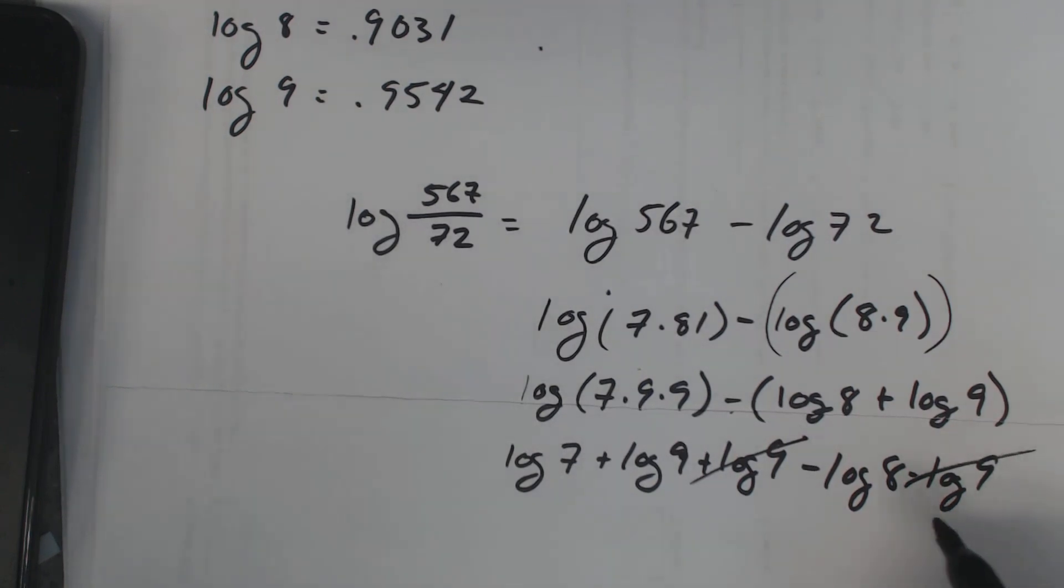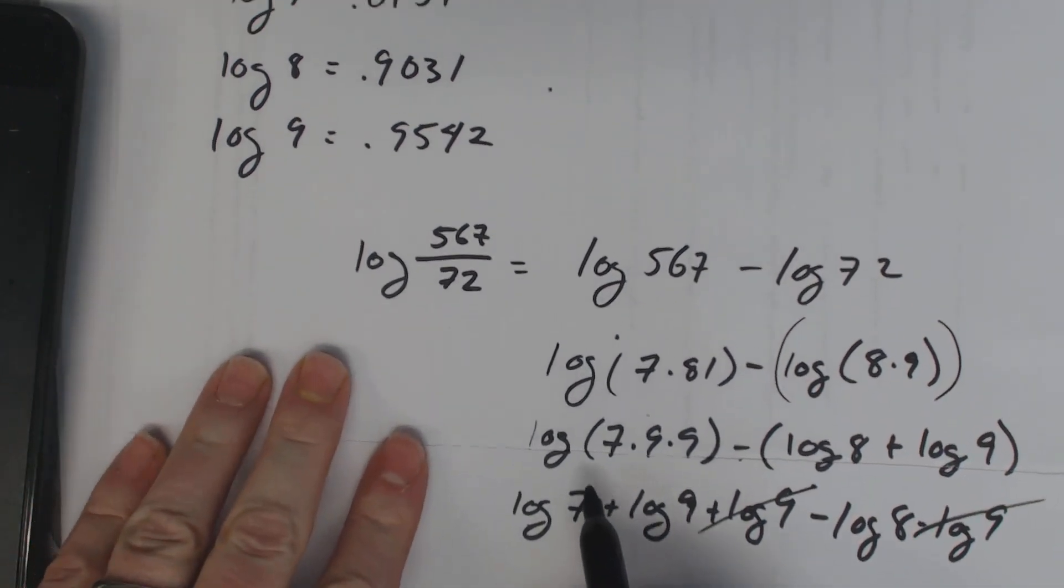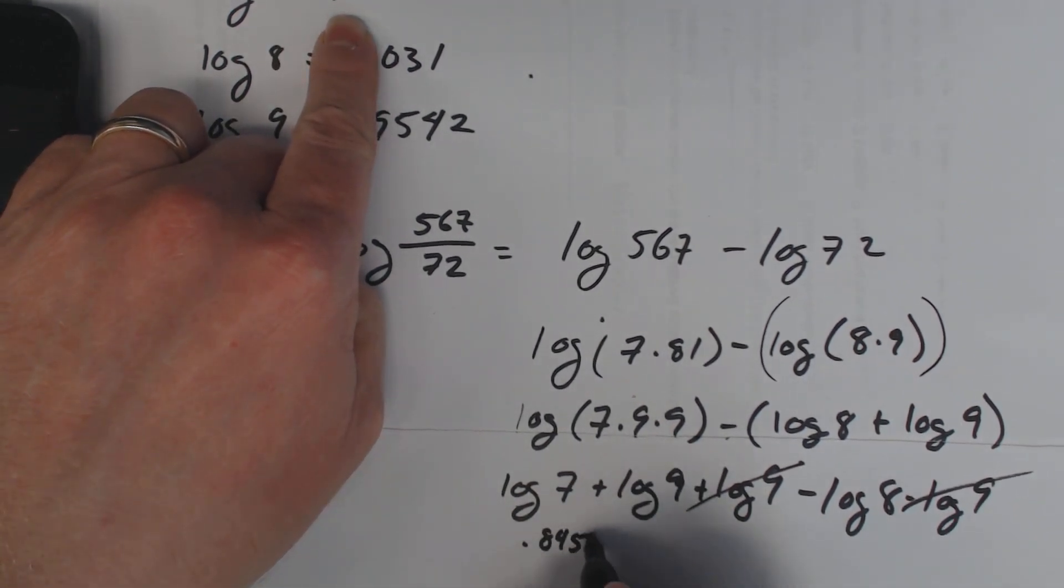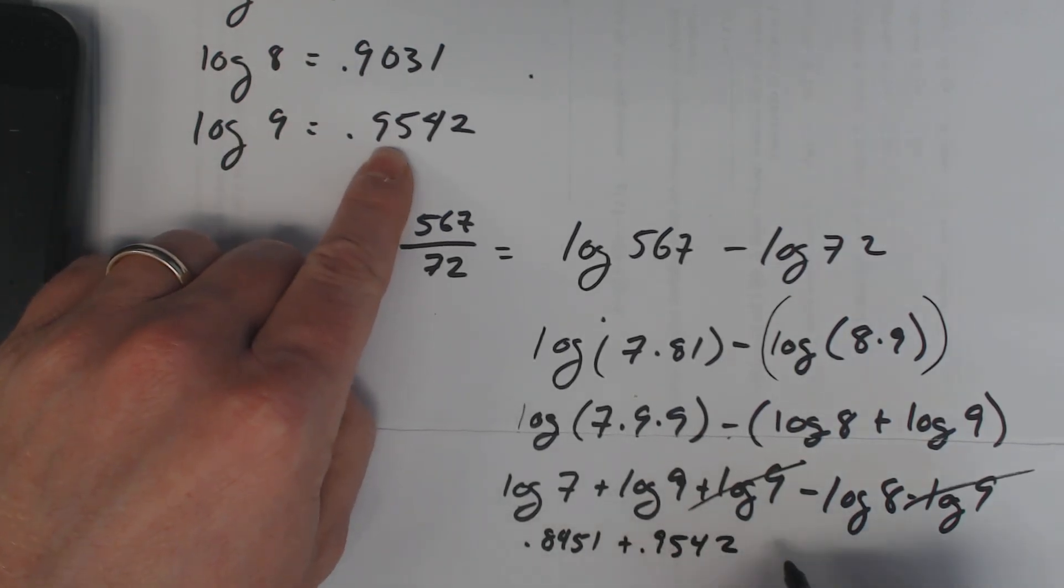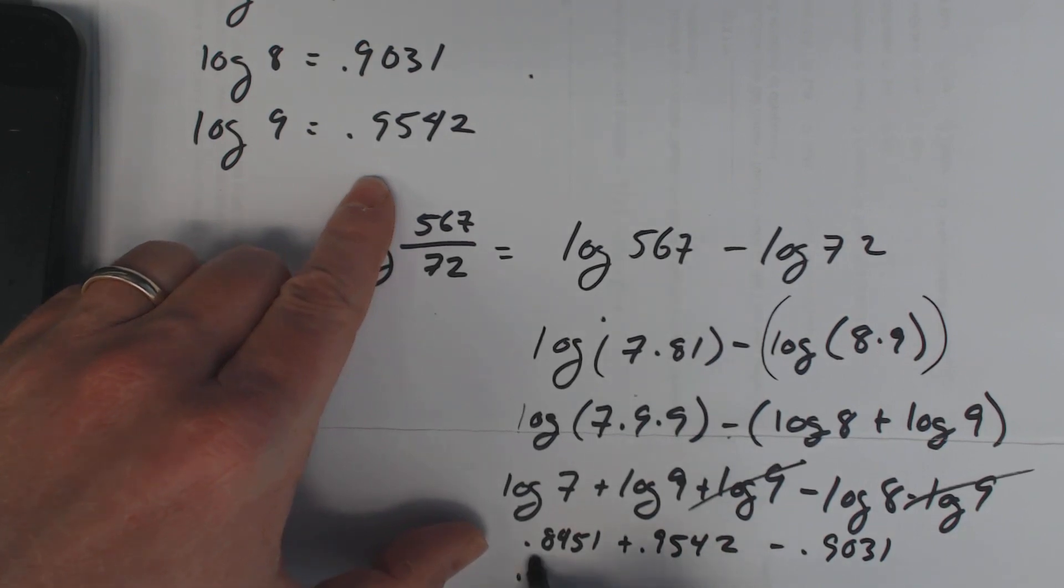I'm going to add these two together. Log 7 is 0.8451, log 9 is 0.9542, minus log 8 which is 0.9031. So I'm going to add these together first, I like to put them underneath each other here.